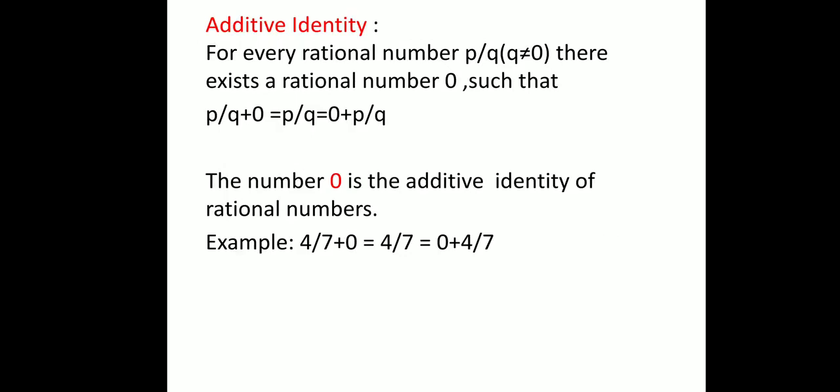I hope you have understood all the operations on rational numbers. Coming to additive identity: for a rational number P/Q (where Q ≠ 0), there exists a rational number 0 such that adding 0 to any rational number gives the same rational number. If I add any number to 0, the result is that same number — same is the case with rational numbers. So we can say that 0 is the additive identity of rational numbers. For example, 4/7 + 0 = 4/7.